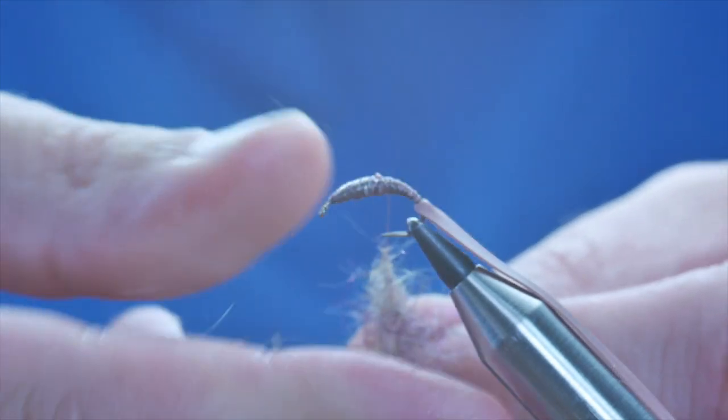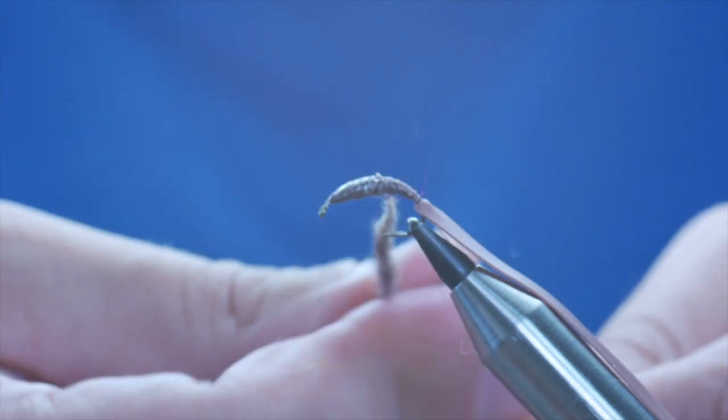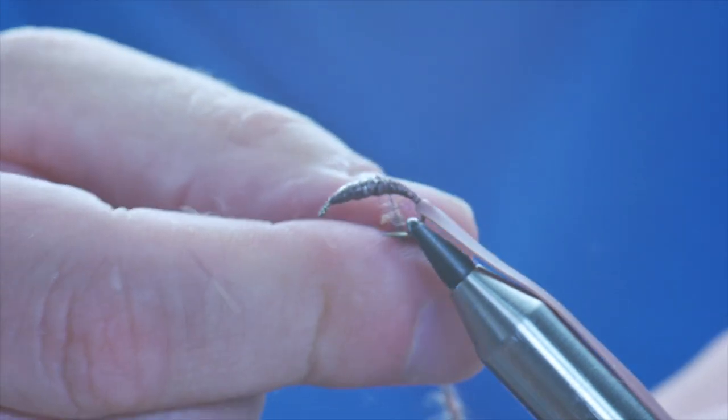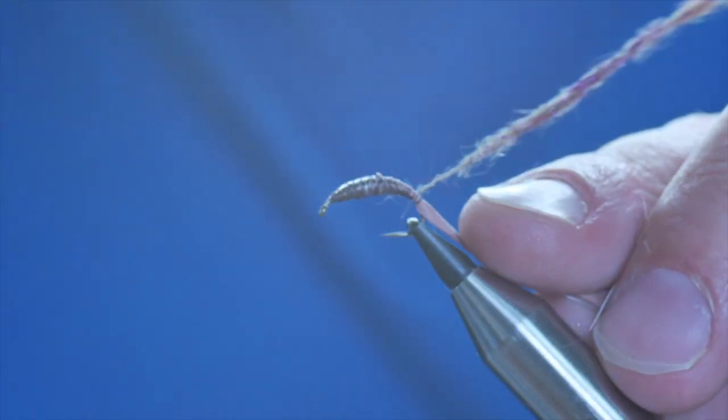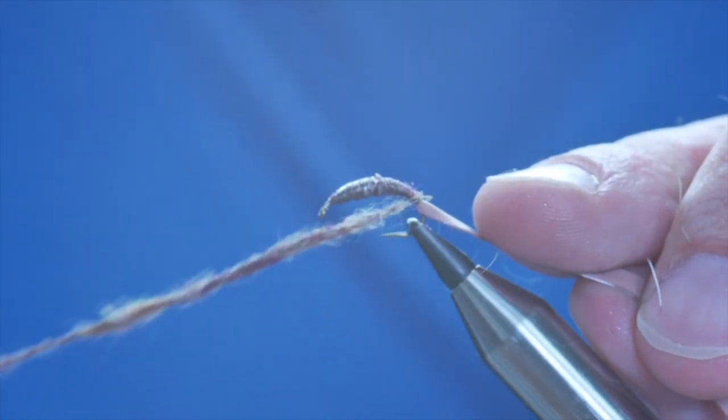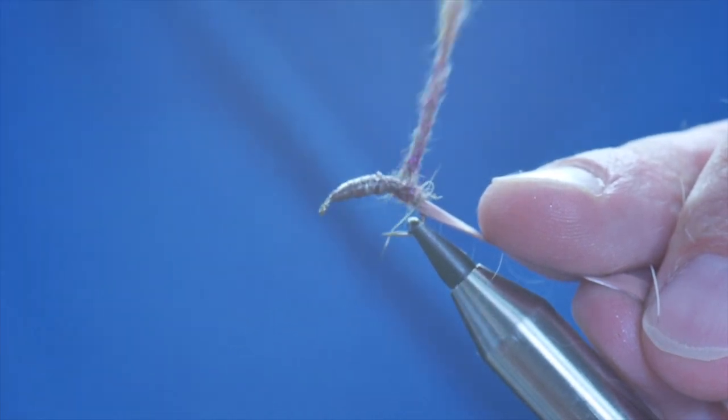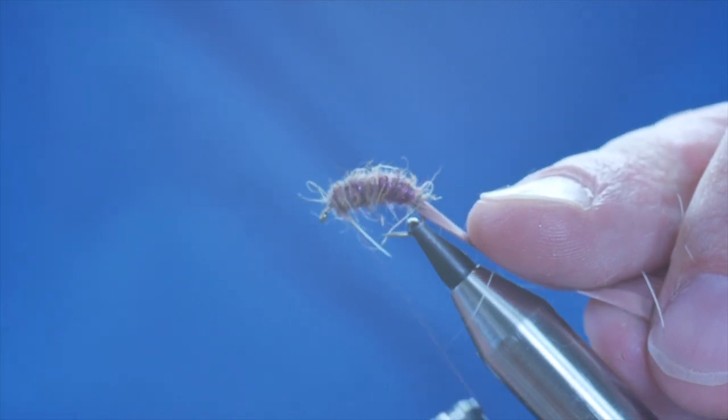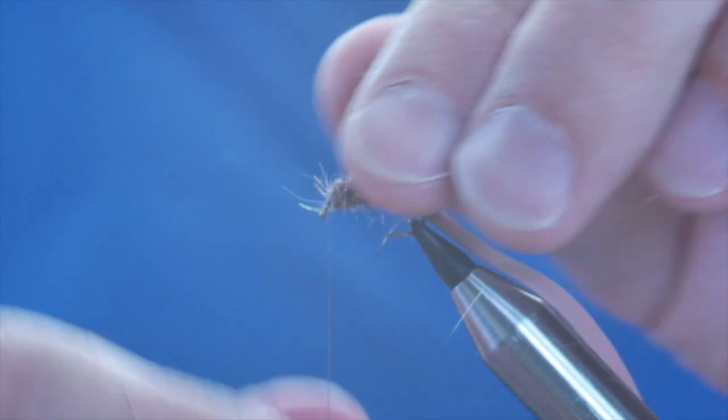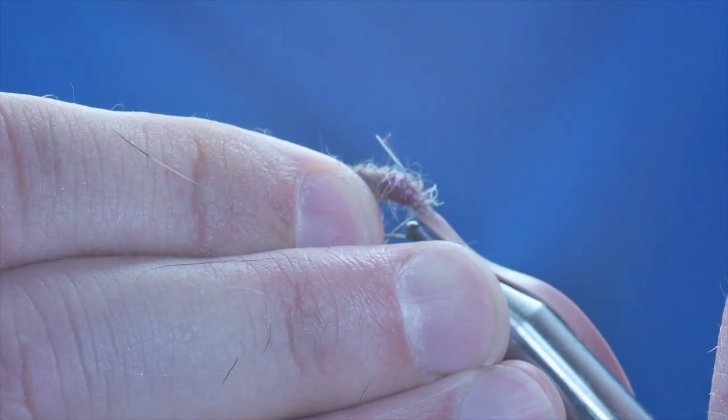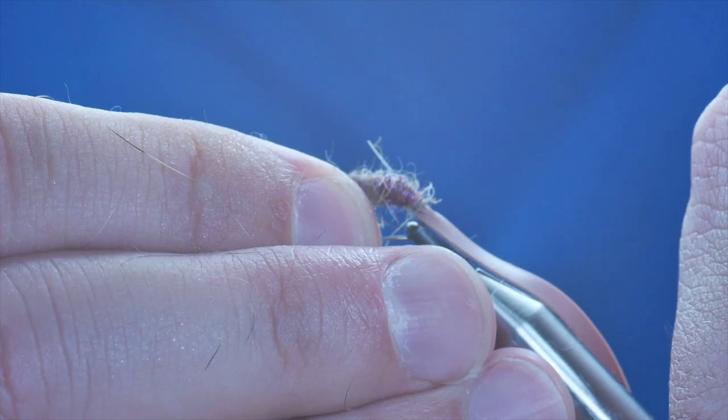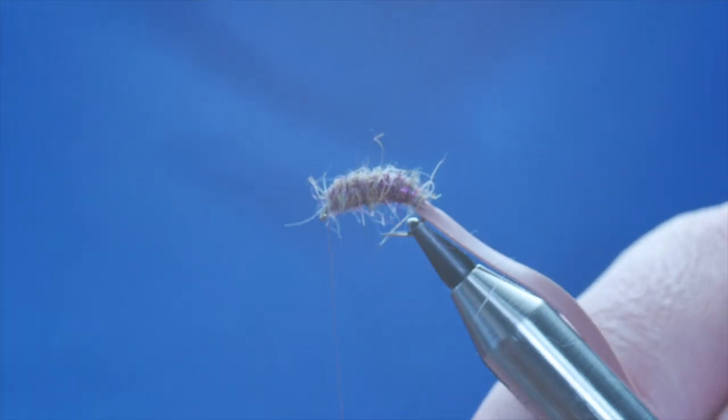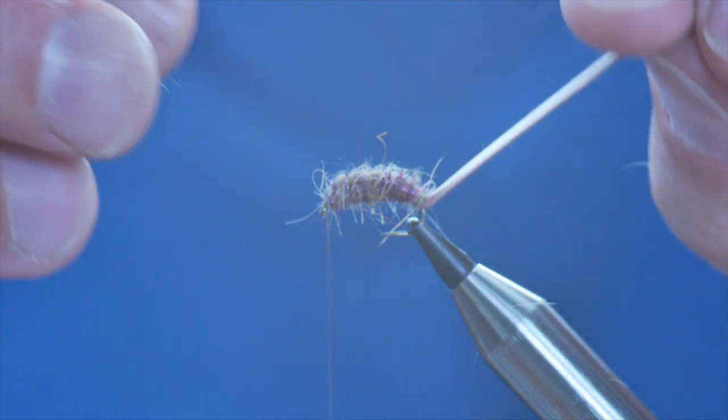I'm just going to take a bit of this dubbing off and I can start to work it onto the thread. Now if you've mixed it in the right quantities it will dub on no problem. If you've got too much of the glister you might find it causes you some issue, but I've got it about right. I'm going to bring my thread to the bottom of my fly now and start to work the body up. Usually I would have to add more dubbing but in this case I seem to have got that bang on the money. I'm just going to adjust the hook in the vice slightly because I'm now going to start working at a different angle.